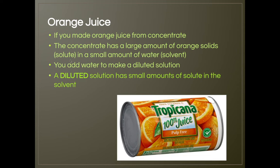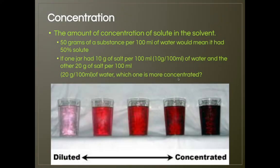You need to be able to calculate concentration. Concentration is the amount of solute in the solvent. So if I had 50 grams of a substance per 100 milliliters of water, it would mean it had 50 percent solute — that's how concentrated it is. One jar had 10 grams of salt per 100 milliliters, while another jar had 20 grams of salt per 100 milliliters. 10 grams per 100 milliliters is 10 percent; 20 grams per 100 milliliters is 20 percent, so 20 grams is more concentrated.